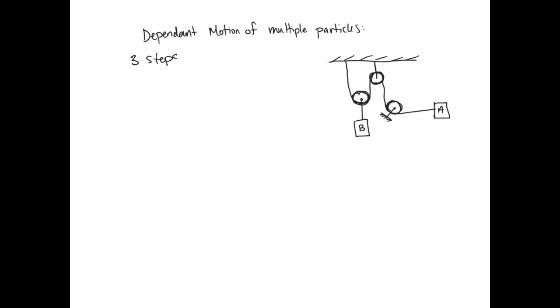So we have three steps. The first step is to establish position coordinates for each weight. Here you're going to see something slightly different than before. In this case, each coordinate must be directed along the path of motion. And the origin does not have to be the same for all particles.